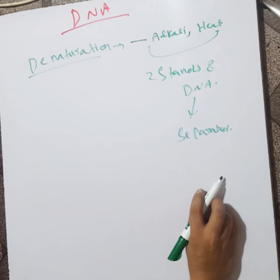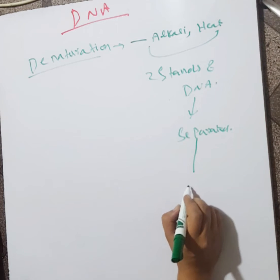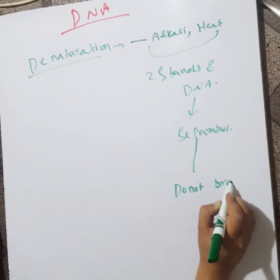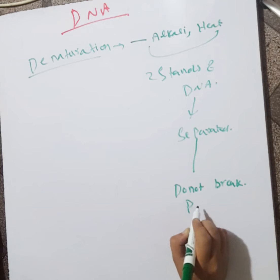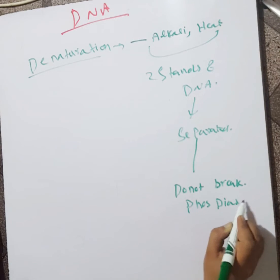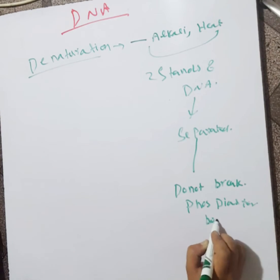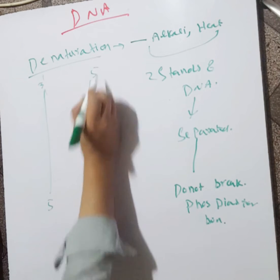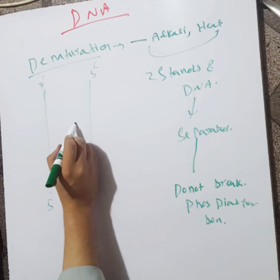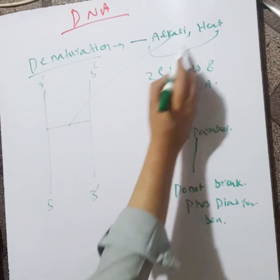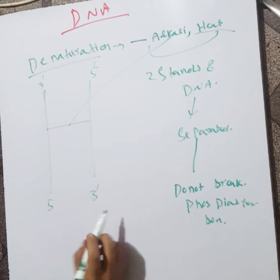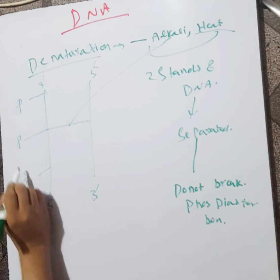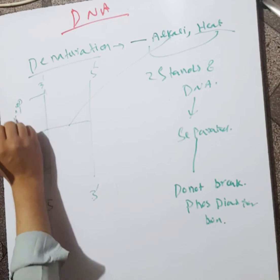But they do not break the phosphodiester bond. This is DNA strand 3-dash to 5-dash, and this is from 5-dash to 3-dash. When these strands become separated by the help of strong alkali or heat, the strands are separated but the phosphate bonds are still present. The phosphodiester bonds — the link between the phosphates — do not break.